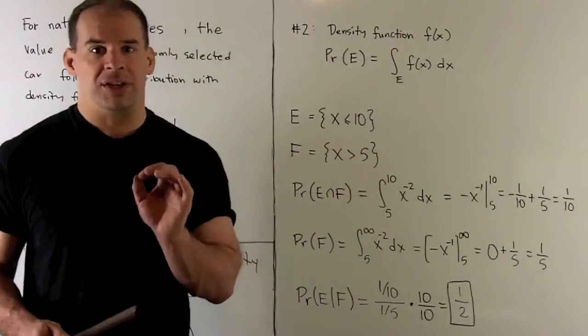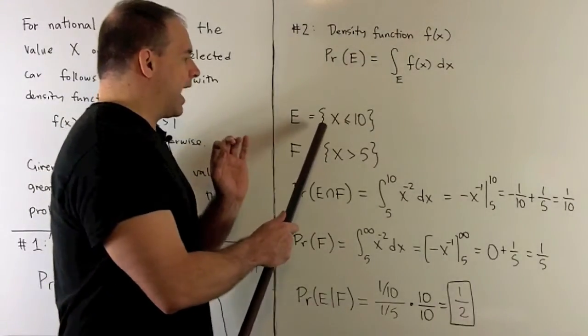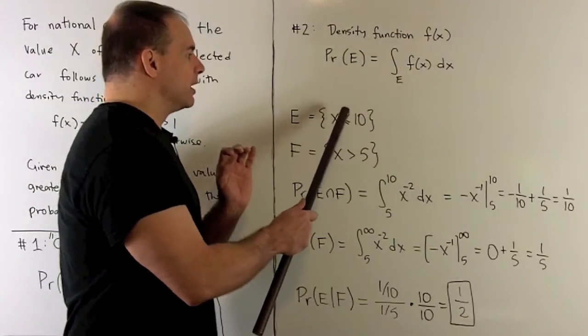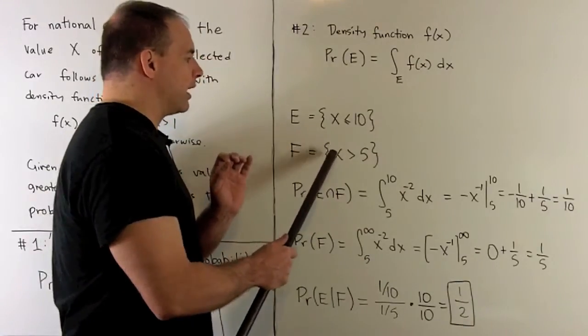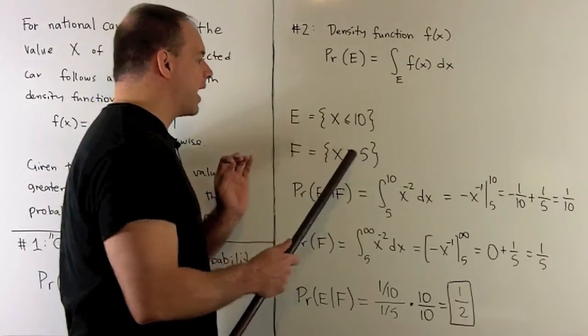Now, we have two events here. First event, we're gonna have that a random variable is less than or equal to 10. Our second event is gonna be that our random variable x is greater than 5.